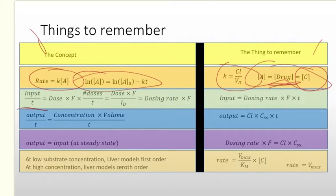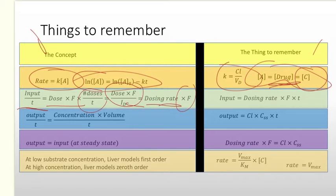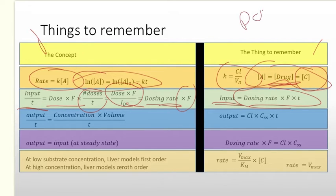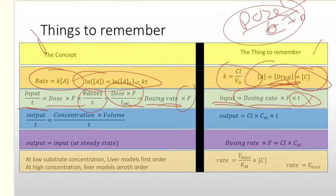What is the input? Input over time equals the drug times the bioavailable fraction times the number of doses over time, which equals the dose times the fraction over the dosing interval. This equals the dosing rate times the bioavailable fraction. The input is the dosing rate times the bioavailable fraction times time, where dosing rate is simply the dose over the dosing interval. Multiplying by time and by the fraction gives you the total mass that's been input.